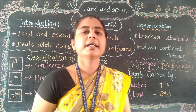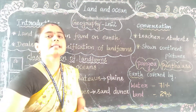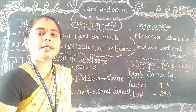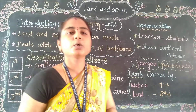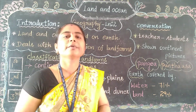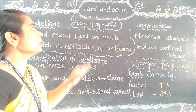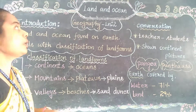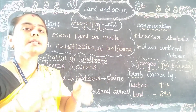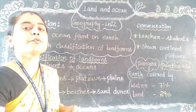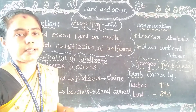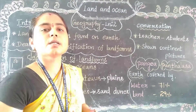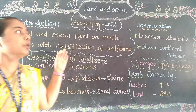Hi, hello, good wishes to everyone. Welcome back to our social class. Today we are going to learn about land and ocean. Before that, you should know what is land and what is ocean. Land, which is fulfilled with a variety of soil, is used to do agriculture — that is the farming process.